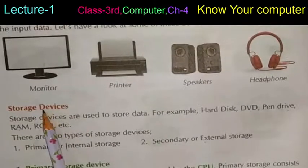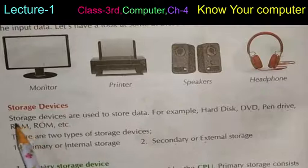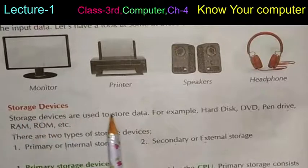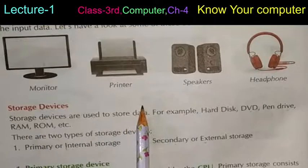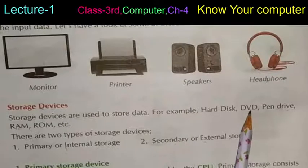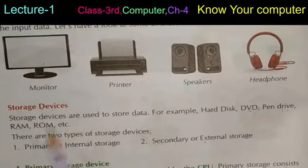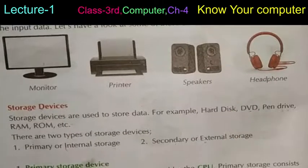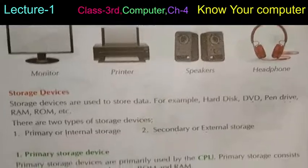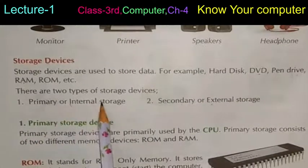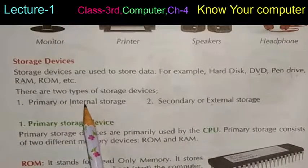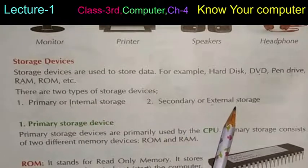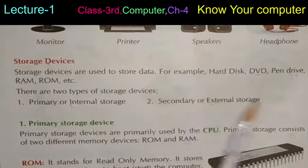Storage devices are used to store data. Examples include hard disk, DVD, pen drive, RAM, ROM, etc. There are two types of storage: primary (internal) storage and secondary (external) storage. Primary storage means the devices are inside the CPU, while secondary and external storage devices are outside the CPU.